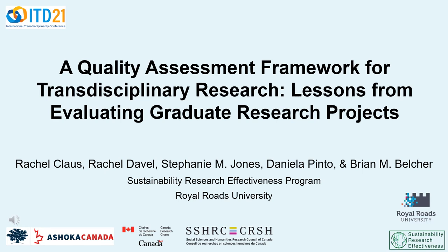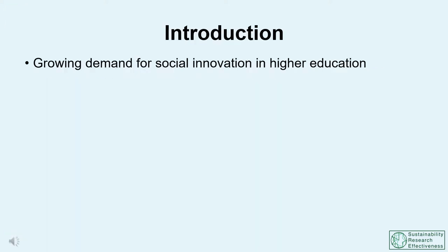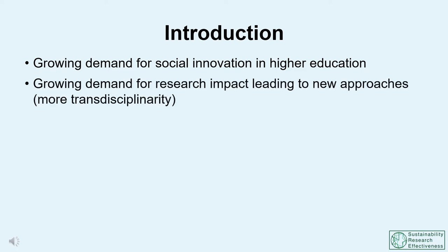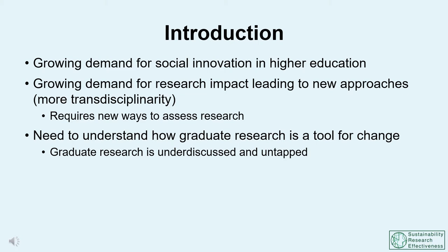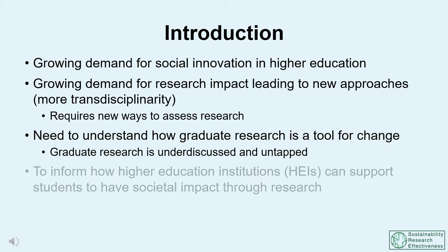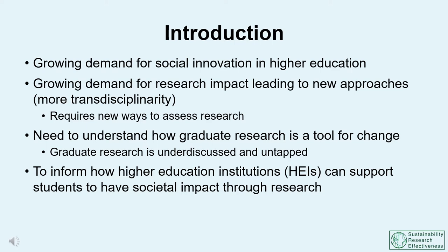This presentation shares methodological and case study findings from an ongoing study of graduate research contributions to change processes. University-based research has a major role to play in addressing societal challenges, as students constitute the current and next generation of researchers, practitioners, and decision makers. Pressure is growing for higher education institutions to deliver and demonstrate impact. The shift towards transdisciplinarity requires new ways of assessing research impact, which has led to the emergence of new research evaluation methods. Graduate research presents a unique opportunity to learn about and improve transdisciplinary research impact. By understanding how graduate research projects make contributions to outcomes and where they fall short, we can inform how higher education institutions can better support more impactful research.